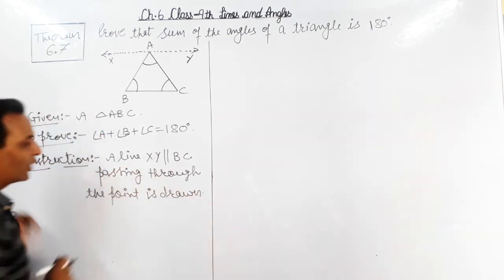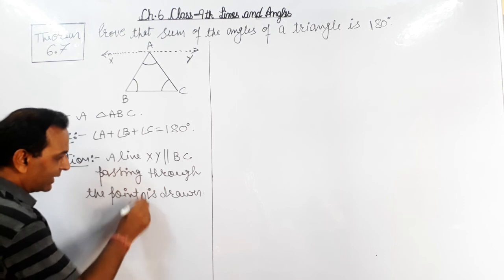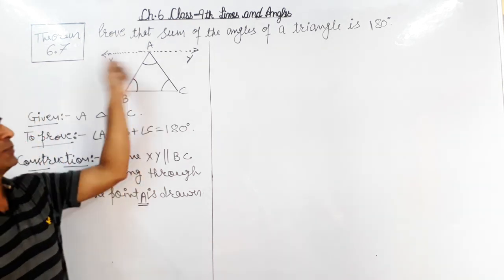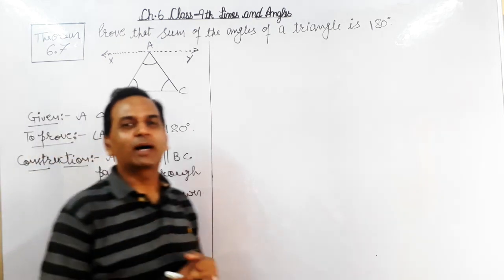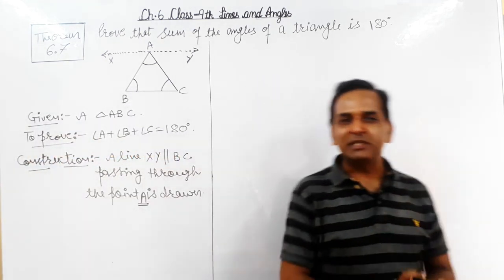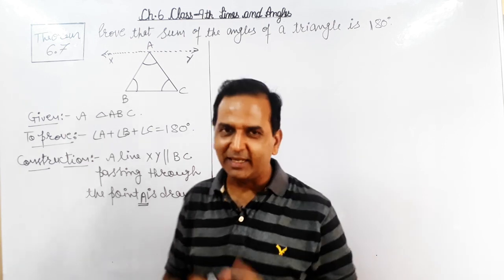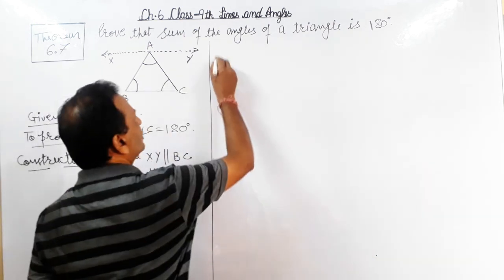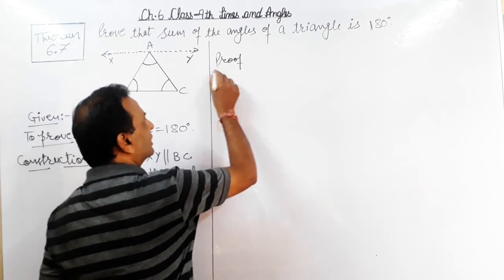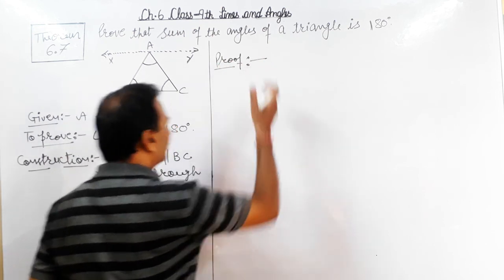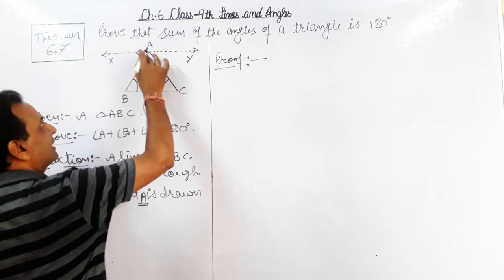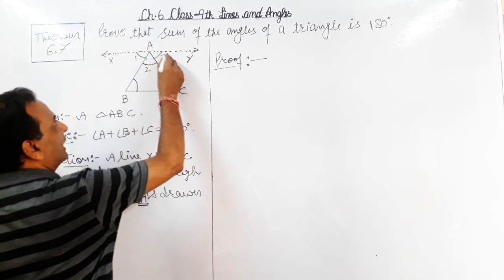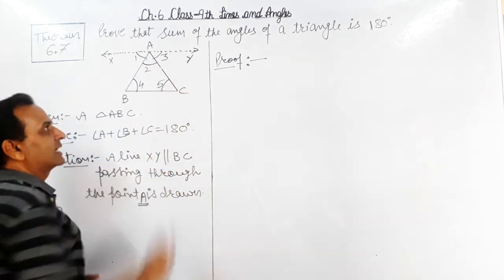Point A में से pass करते हुए एक line XY which is parallel to the side BC of triangle ABC — construction complete होती है। अब proof में कैसे start करना है — यहां से angles के number डालता हूँ: angle 1, angle 2, angle 3, angle 4, and angle 5।